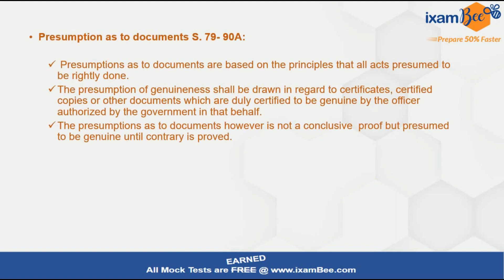Then you come to the main part of your answer: presumptions as to documents, which contains more than 10 sections, so be very specific. This should constitute about 50 percent of your answer weightage, and the other 50 percent to the general discussion of presumptions, since your question inherently consists of two parts. In this section, include important sections on presumptions as to documents, presumptions as to electronic records, five-year-old documents, genuineness of certified copies — all of these are expected. Note that presumption as to documents is not conclusive proof unless the contrary is proved — this is an important point.